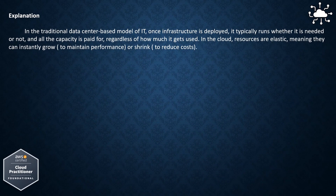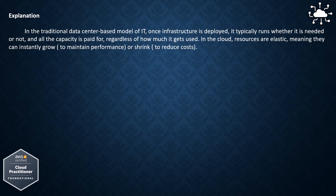In the traditional data center-based model of IT, once the infrastructure is deployed, it typically runs whether it is needed or not, and all the capacity is paid for, regardless of how much it gets used. In the cloud, resources are elastic, meaning they can instantly grow to maintain performance, or shrink to reduce costs.